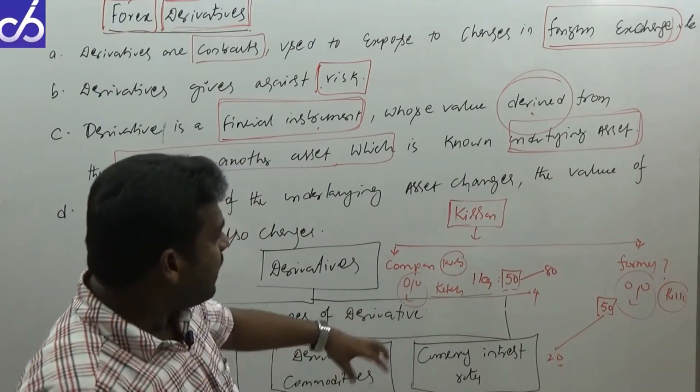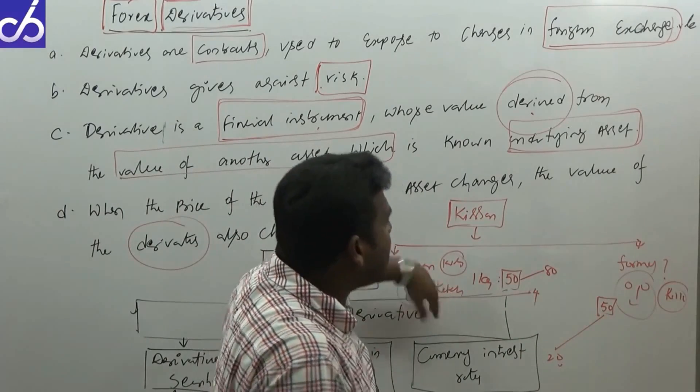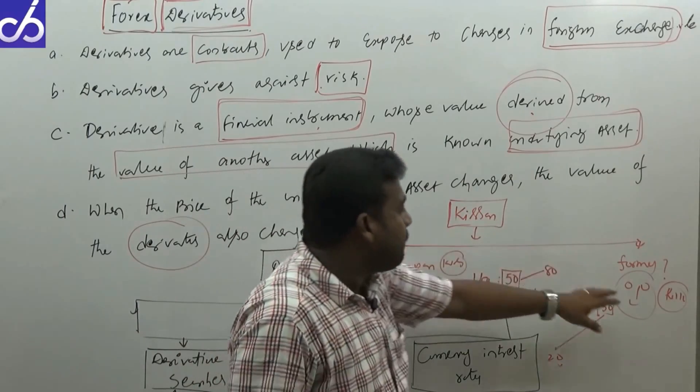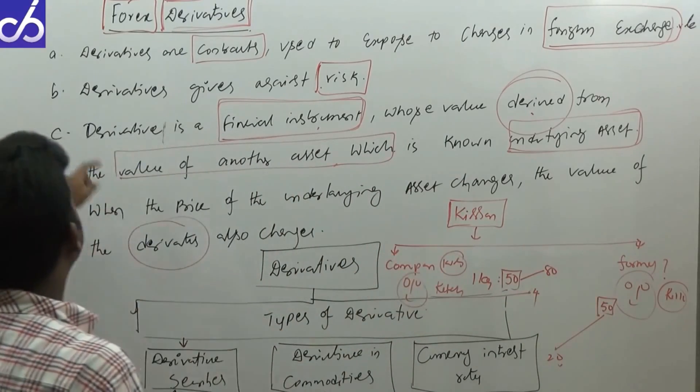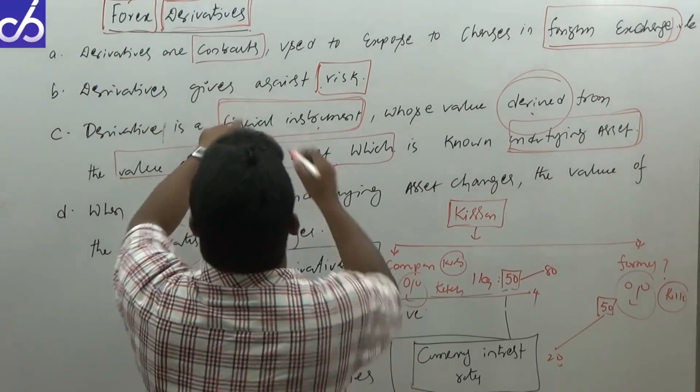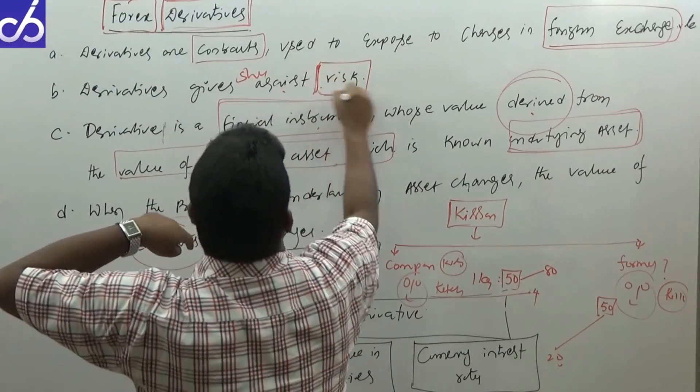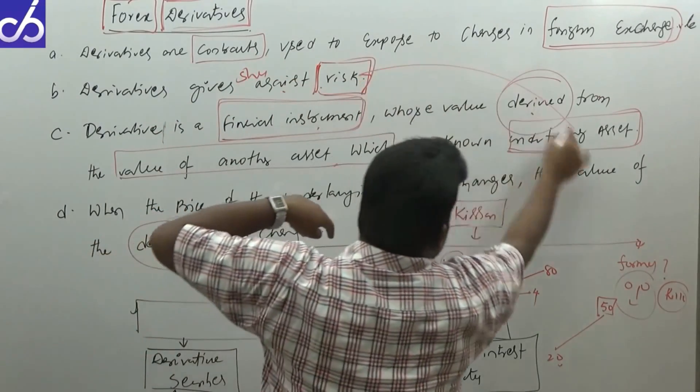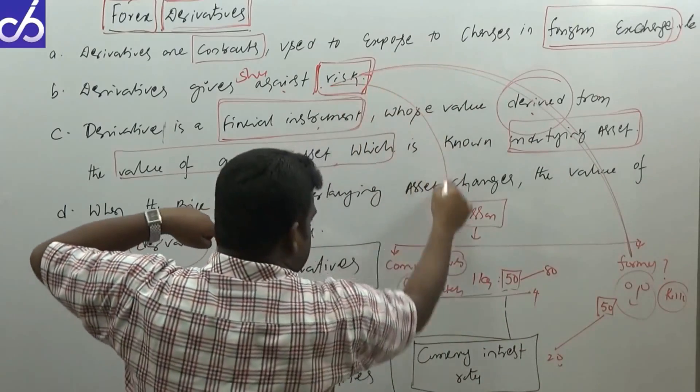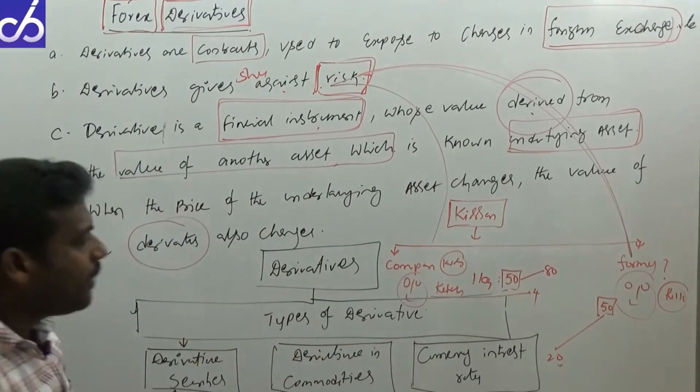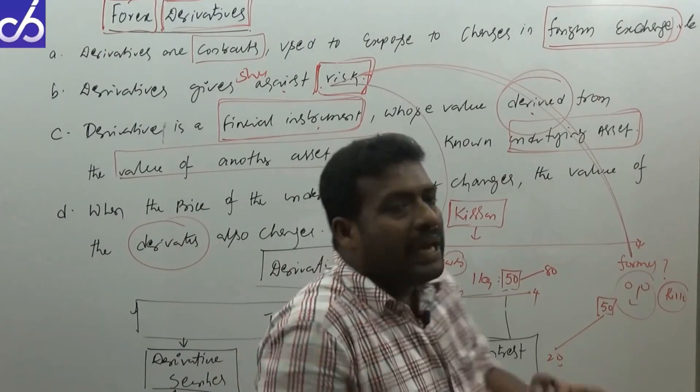The company may expect the price increase, so both people have a risk. I said that derivatives give shelter against risk - both parties' risk element.